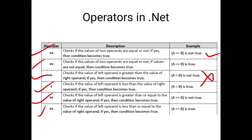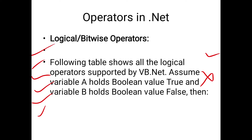Then less than or equal to — it checks if the value of the left operand is less than or equal to the value of the right operand. If yes, then the condition becomes true. A less than or equal to B is true. This covers all the comparison operators.